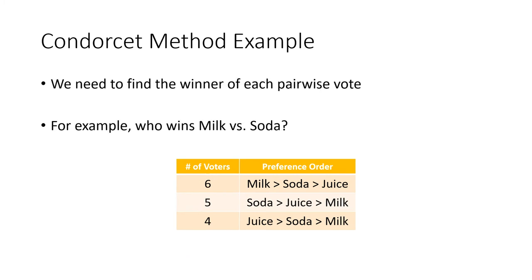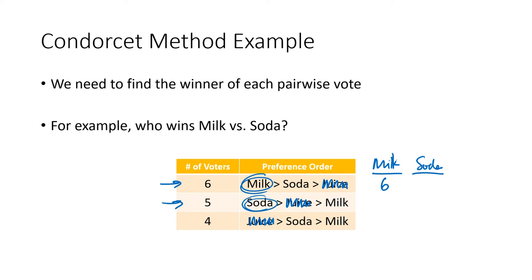Let's find the winner of these pairwise elections, starting with milk versus soda. I'm mentally blocking out juice and just tallying milk versus soda. The six voters prefer milk as their top choice, so they vote for milk. The five voters whose top choice is soda vote for soda. The four voters whose top choice is juice can't vote for juice right now, so instead they vote for their second choice, which is soda. So those four votes go for soda. Milk got a total of six votes, soda got nine votes — five plus four — and soda is the winner of the milk versus soda election.